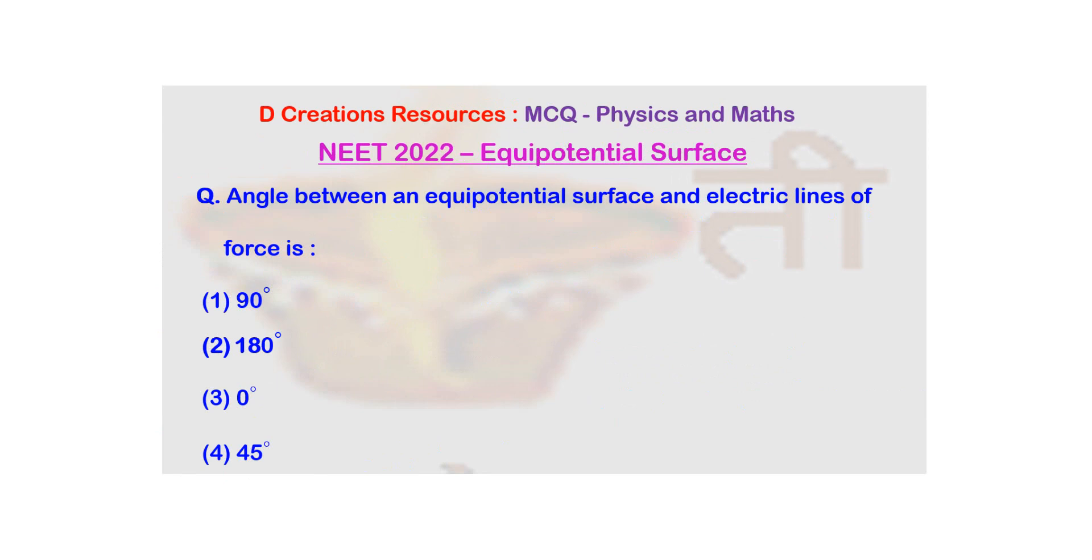If you consider a point charge, how will its equipotential surface look? It will be basically a concentric spherical shell. And the direction of the equipotential surface is obviously from high potential to low potential.